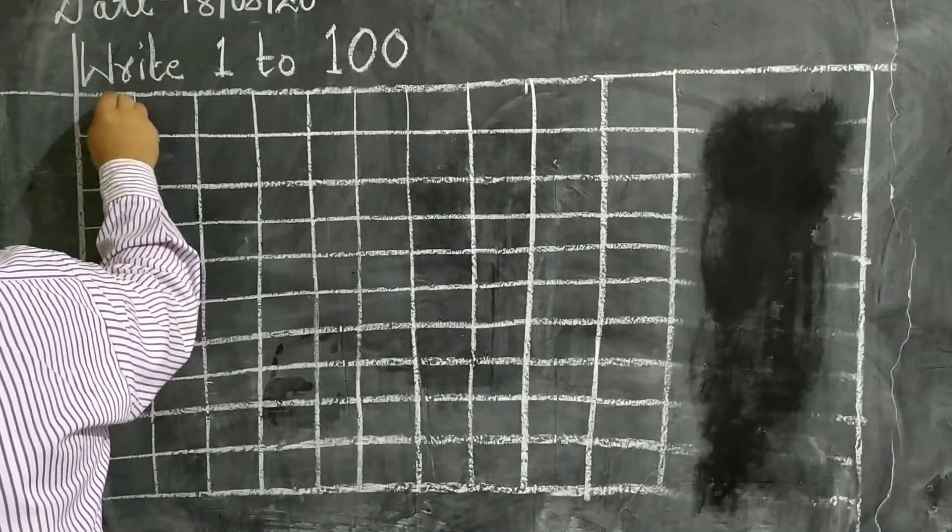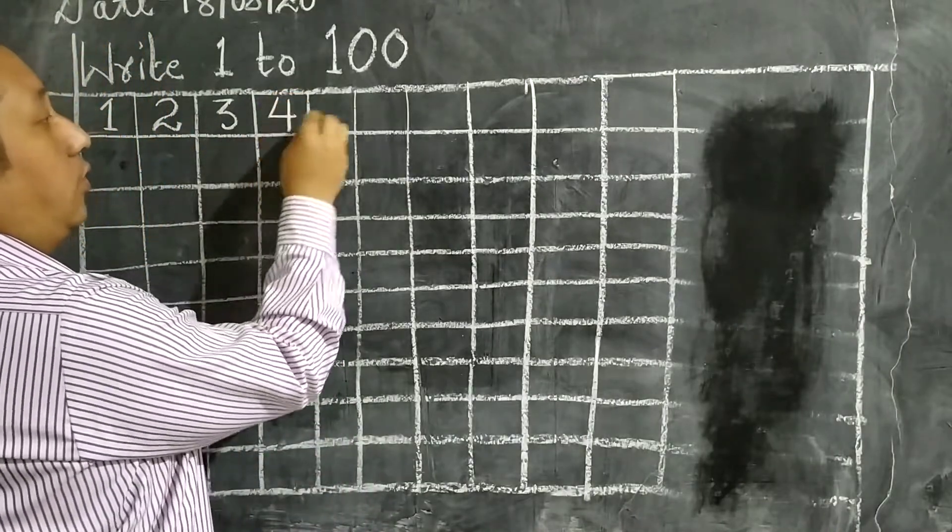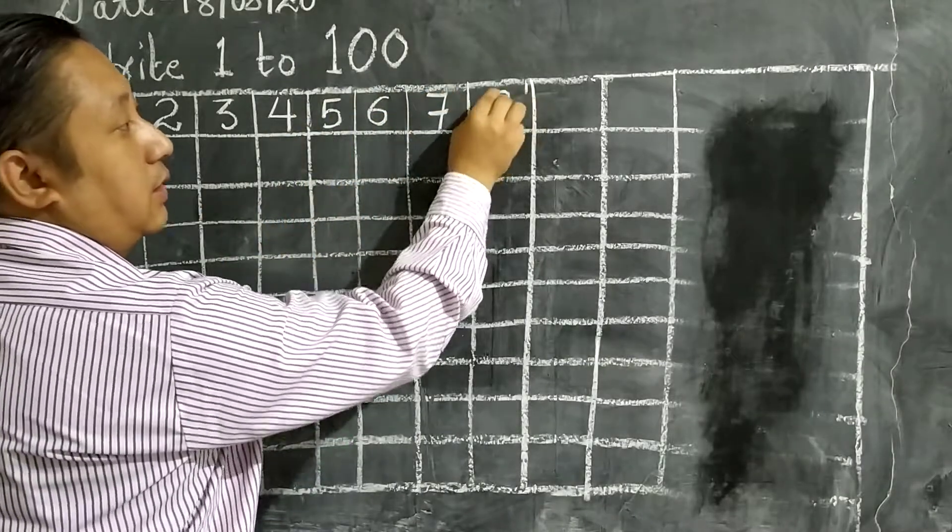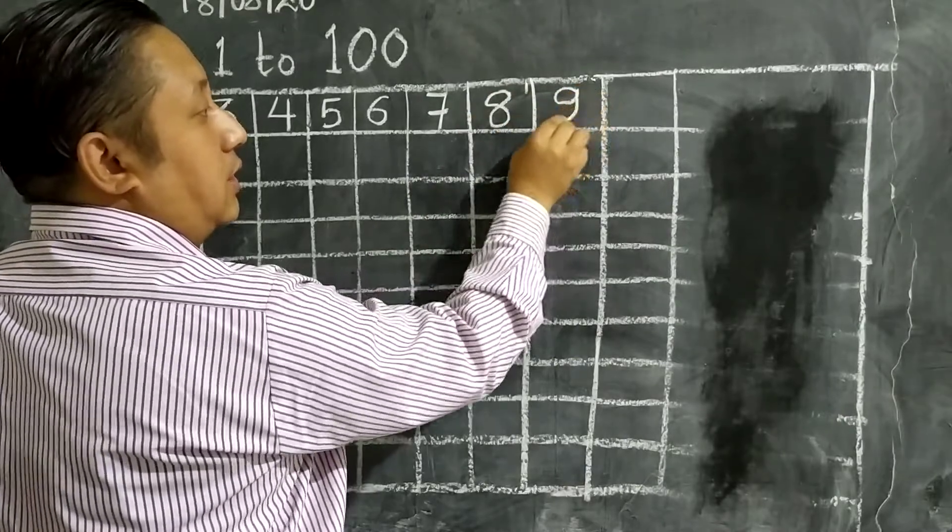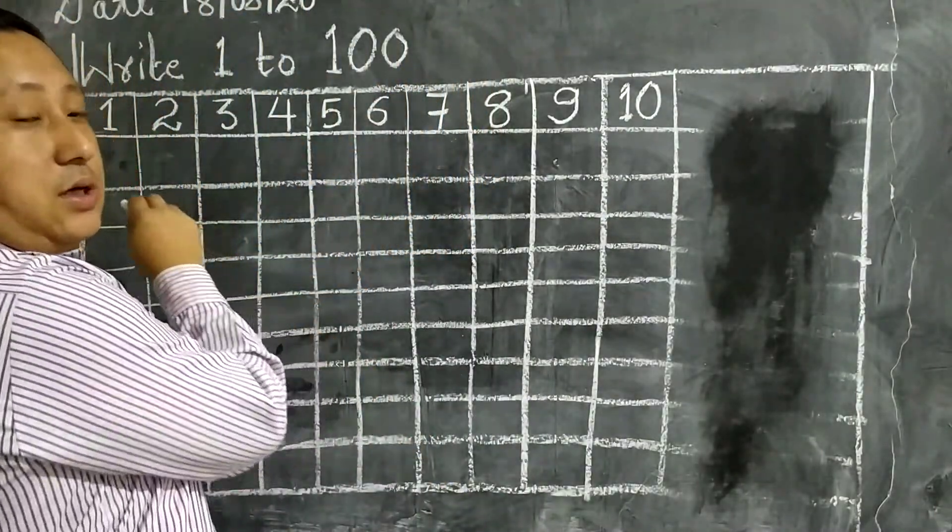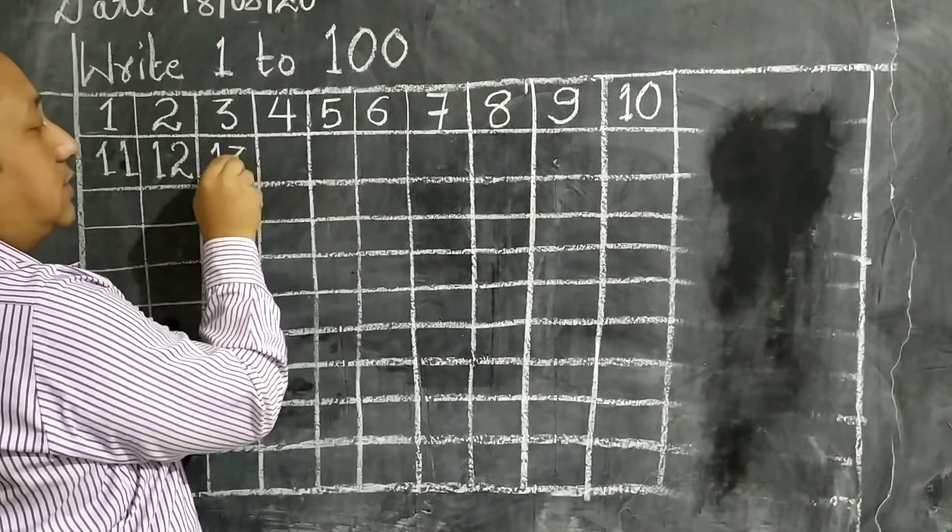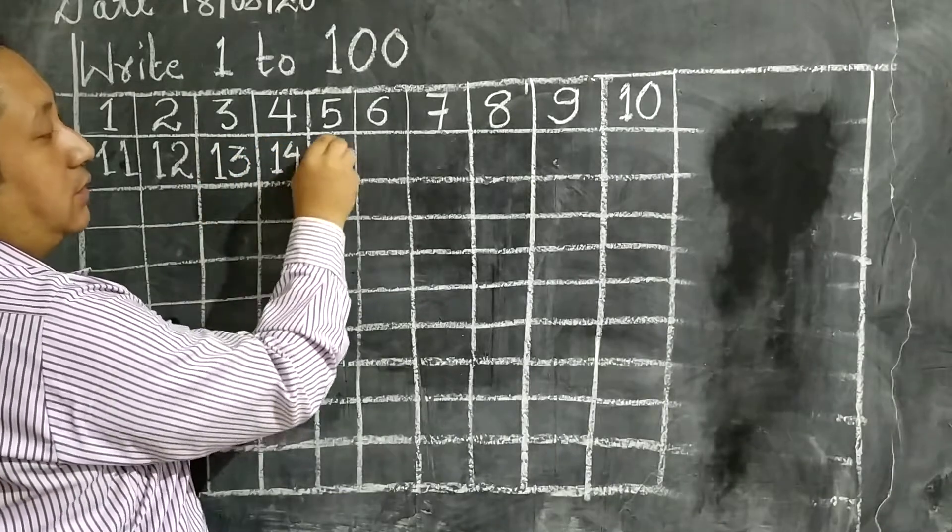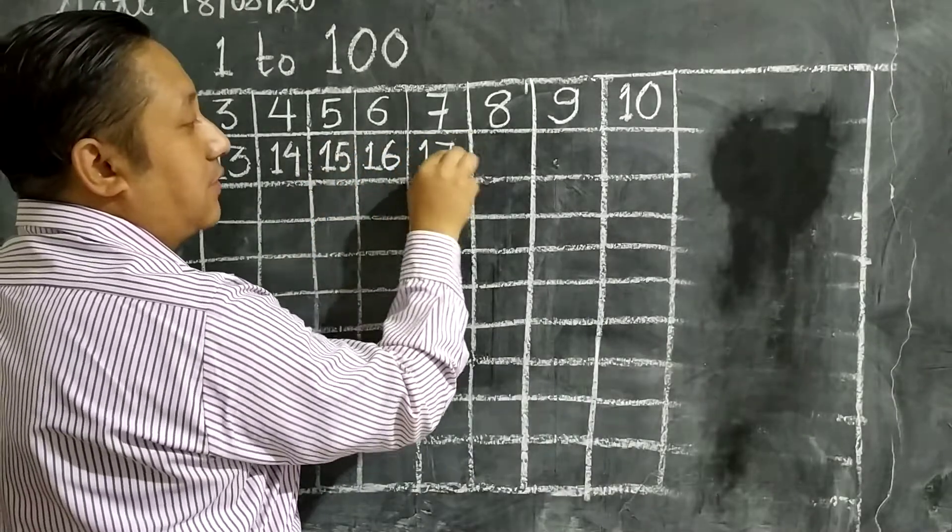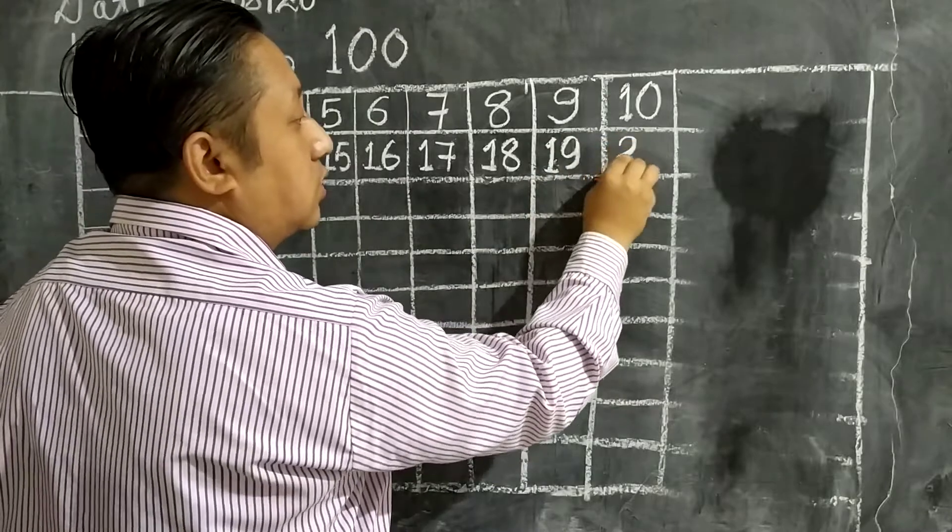It is one, two, three, yes or no? Four, five, six, yes or no? Seven, eight, nine, one zero, ten. It is one zero, ten. Now again, one one, eleven. One two, twelve. One three, thirteen. One four, fourteen. One five, fifteen. One six, sixteen. One seven, seventeen. One eight, eighteen. One nine, nineteen. Two zero, twenty.